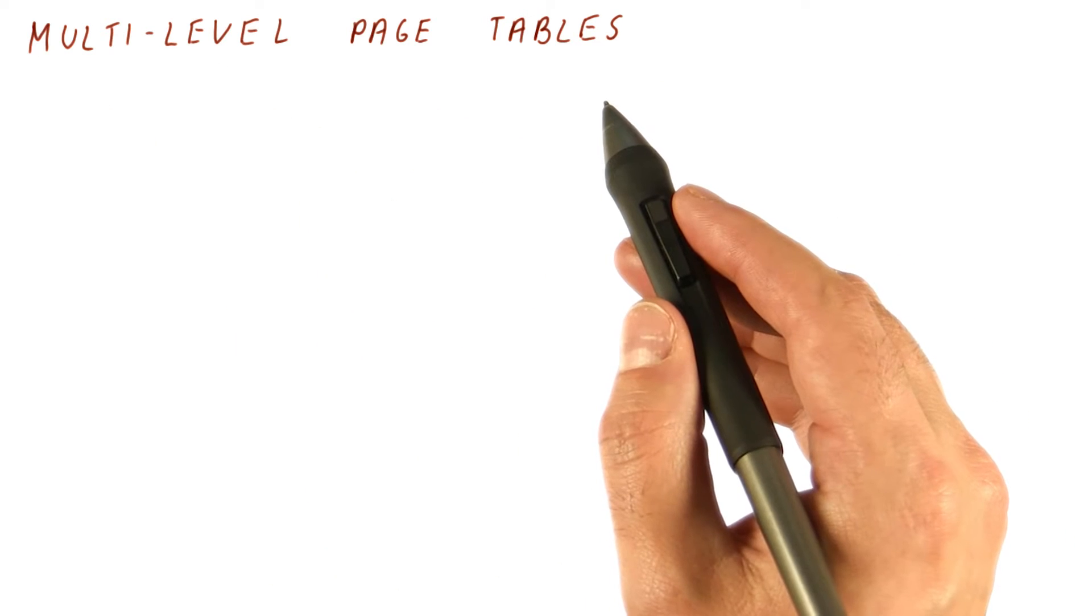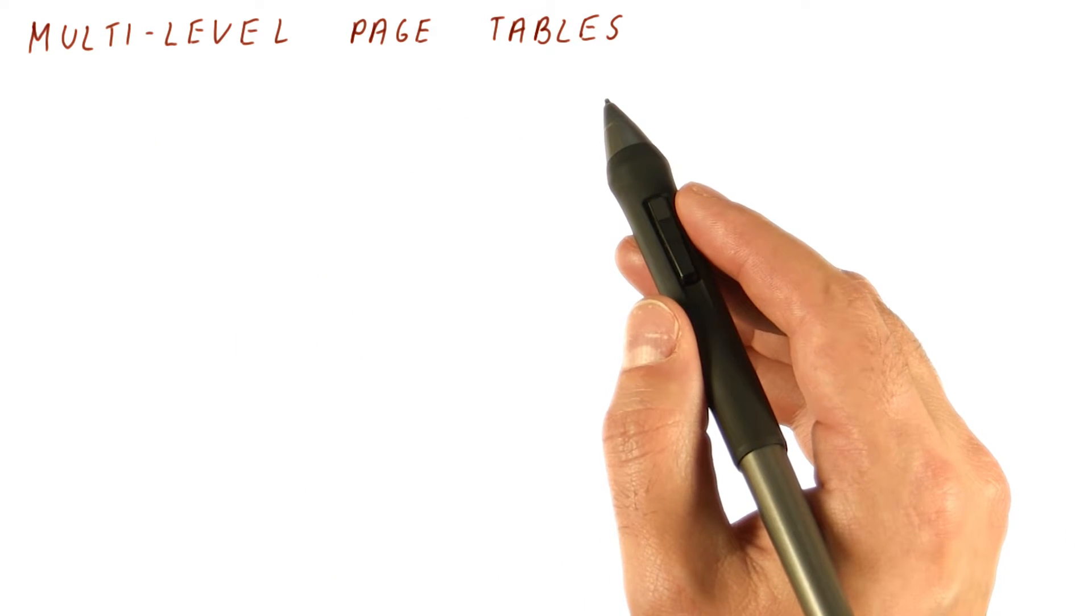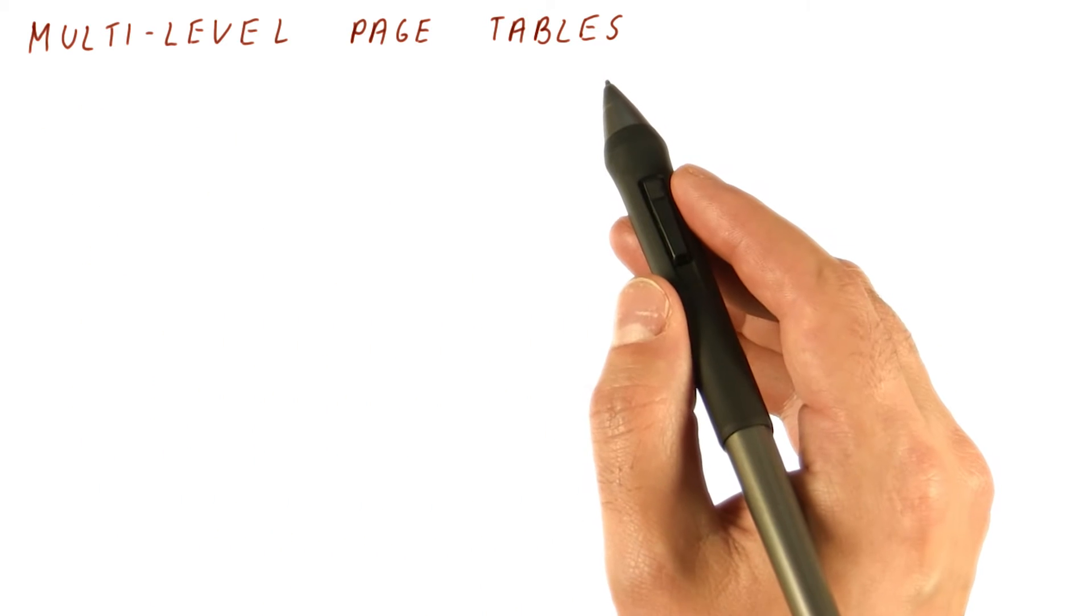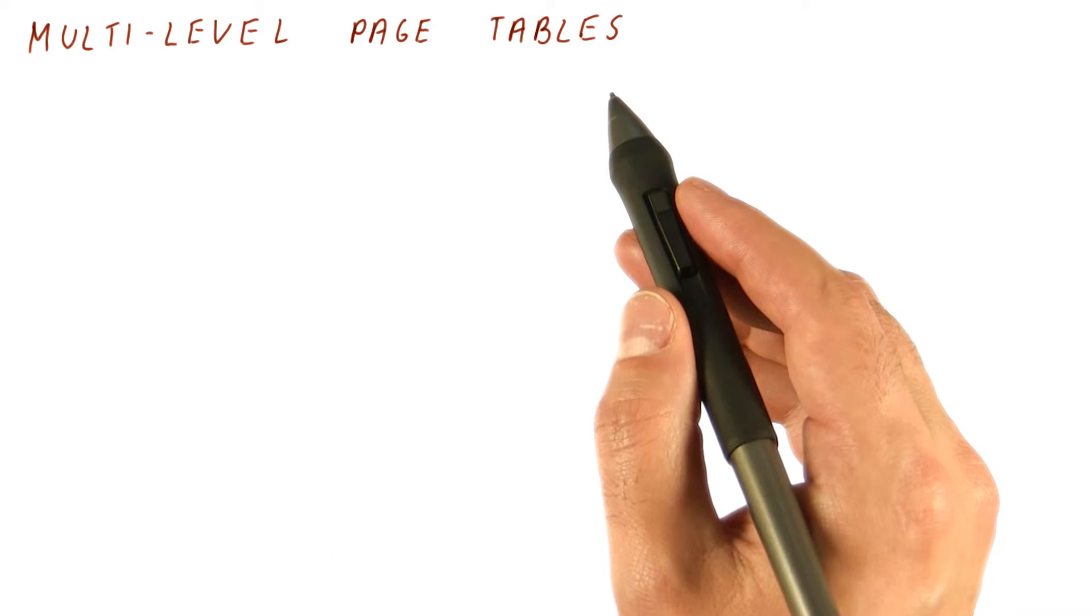So now that we have seen that flat page tables can be quite large, even for 32-bit address spaces, and are too big to even fit in memory for 64-bit address spaces, let's talk about multi-level page tables, which is how we reduce the size of page tables when we have a large address space.